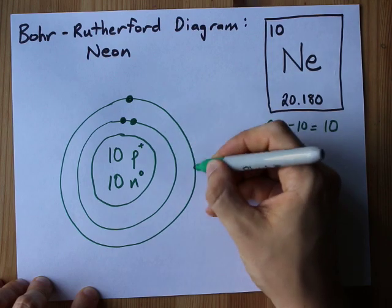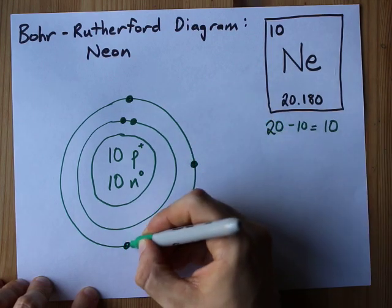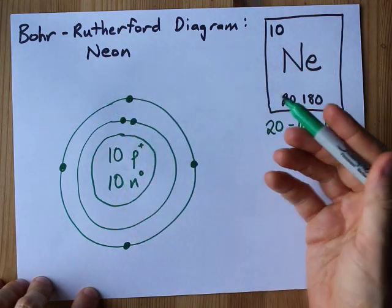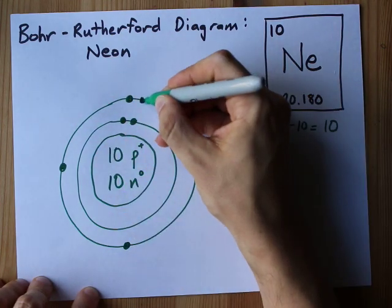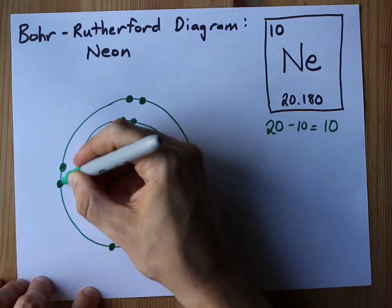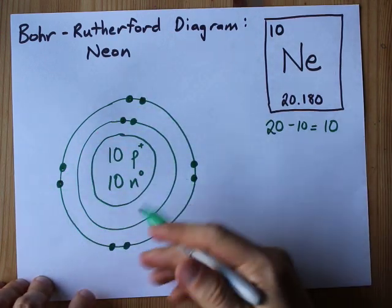So 1, 2, 3, 4. You'll note that I'm separating out my singles before I double any up. 5, 6, 7, 8. That's 8 electrons in my second shell. That's as many as it can hold.